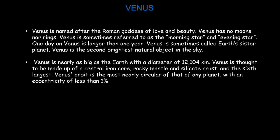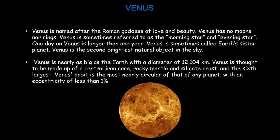Venus is named after the Roman goddess of love and beauty. Venus has no moons nor rings. Venus is sometimes referred to as the morning and evening star. One day on Venus is longer than one year. Venus is sometimes called Earth's sister planet. Venus is the second brightest natural object in the sky. Venus is nearly as big as the Earth with a diameter of 12,104 km. Venus is thought to be made up of a central iron core, rocky mantle, and silicate crust. Venus's orbit is the most nearly circular of any planet with an eccentricity of less than 1%.